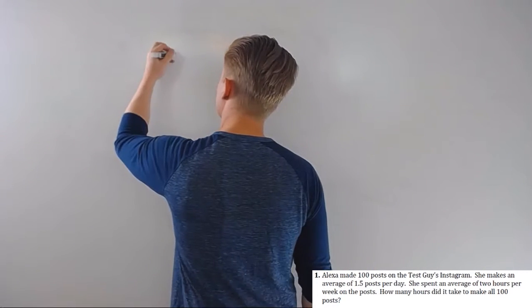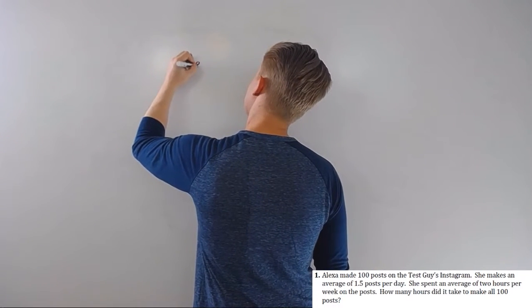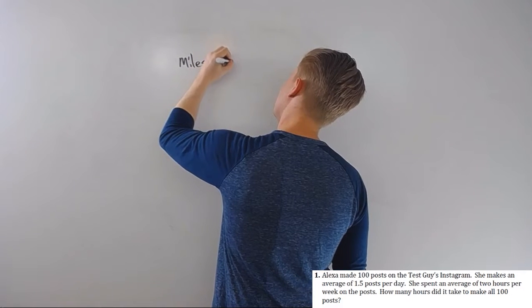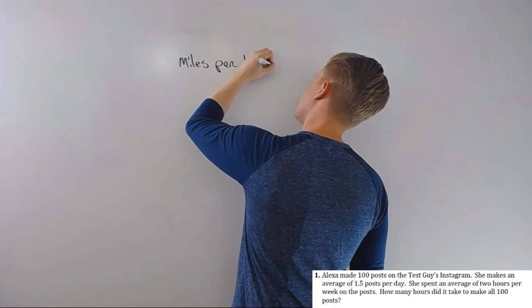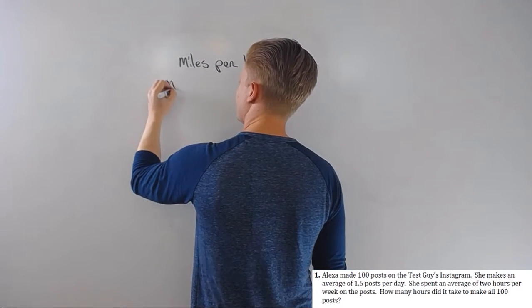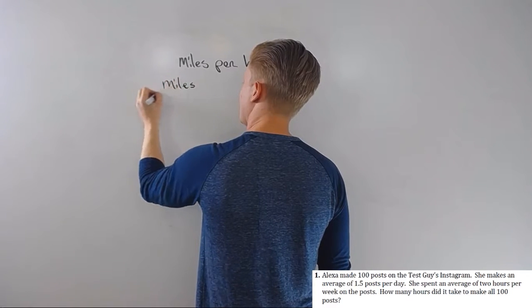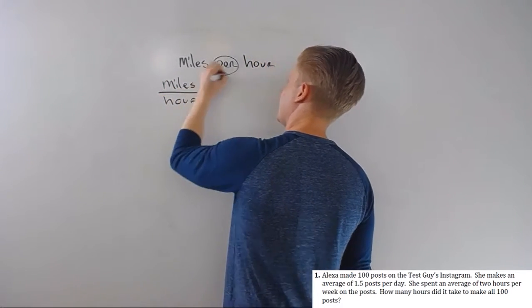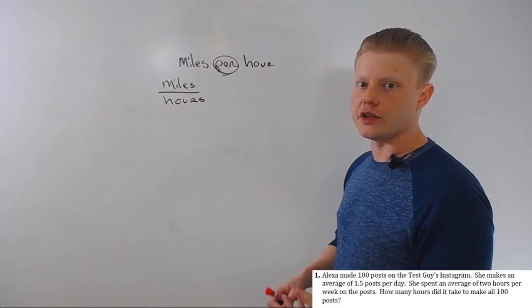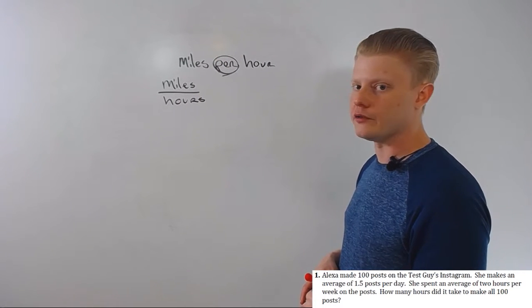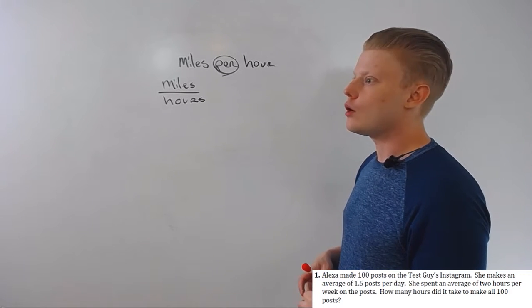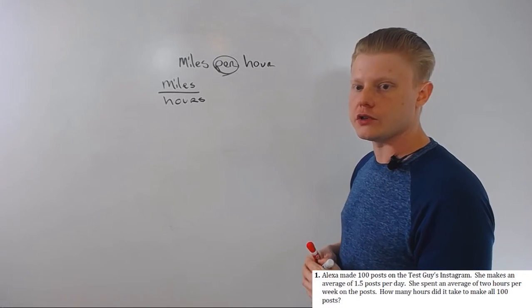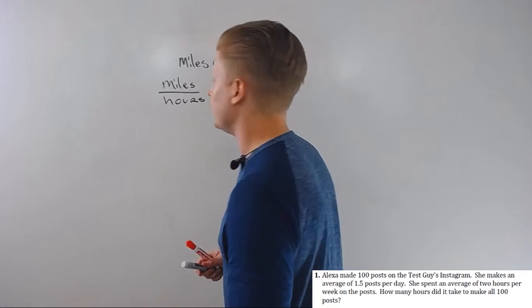Miles per hour is miles over hours. The 'per' is a dividing line. You'd also say the ratio 'is' is a dividing line. So when you deal with unit conversions, keep that in mind because that's going to be really helpful.